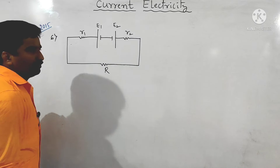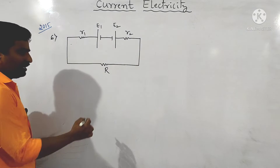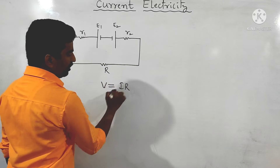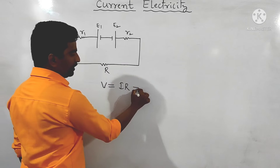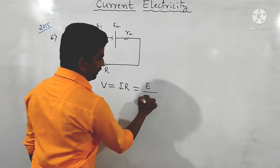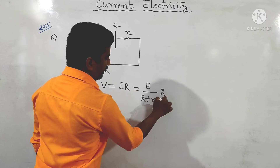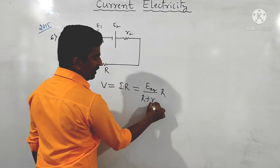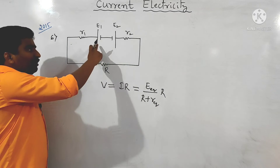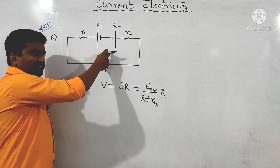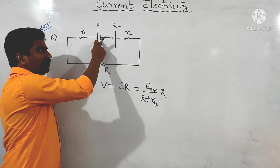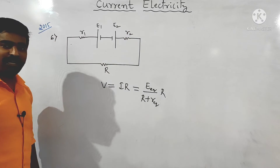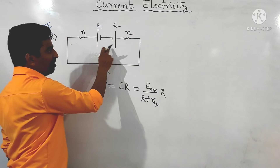In opposition, the negative terminal is connected to negative terminal and positive to positive. The terminal potential difference V equals I × r. The formula for current is I = E / (R + r). When cells are correctly connected, negative connects to positive; when wrongly connected (in opposition), it's different.